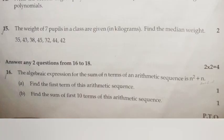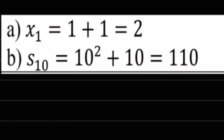Question 16: The algebraic expression for the sum of n terms of an arithmetic sequence is n squared plus n. A: Find the first term of this arithmetic sequence. B: Find the sum of first 10 terms of this arithmetic sequence. Answer A: x1 equals 1 plus 1 equals 2. Answer B: S10 equals 10 squared plus 10 equals 110.